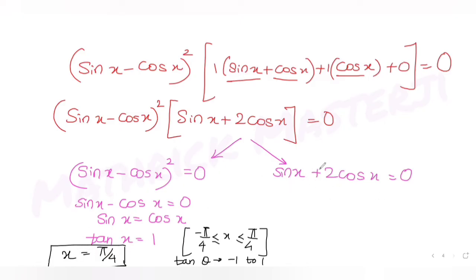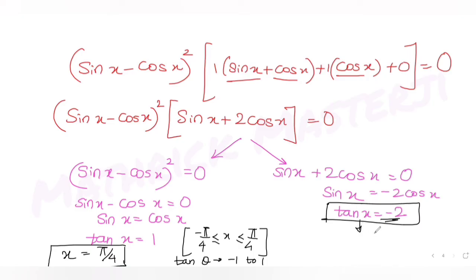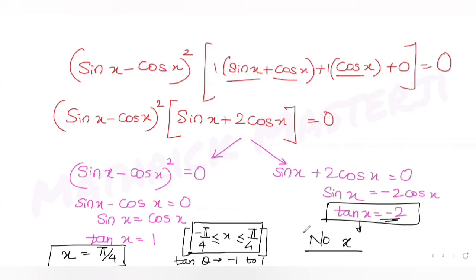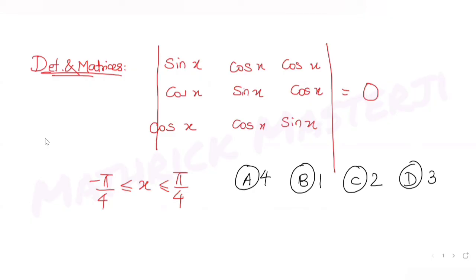For the second factor, sin x plus two cos x = 0 gives sin x = minus two cos x, so tan x = minus two. But since tan x only ranges from minus one to plus one in the given interval, tan x = minus two has no solution here. So this expression gives no root, and the total number of distinct real roots is one.